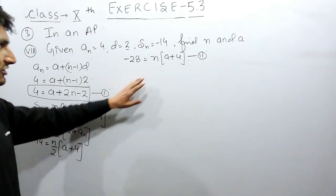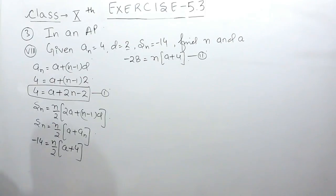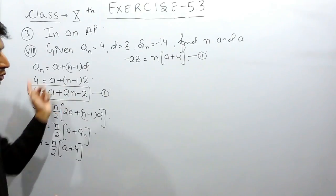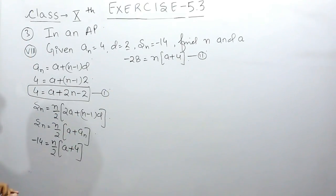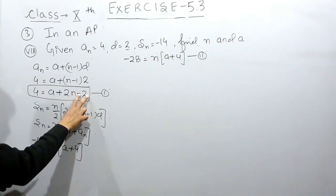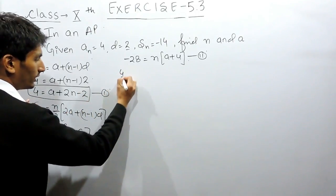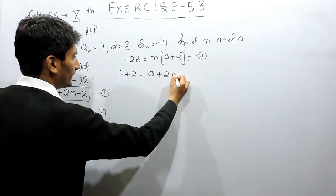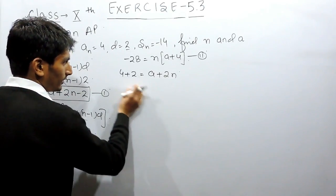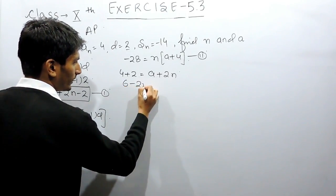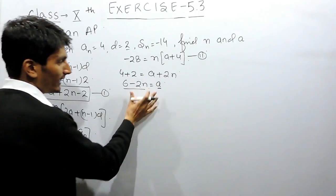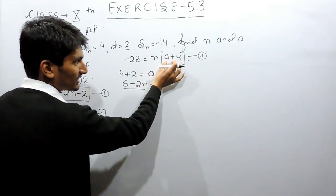From equation one and equation two, we can substitute the value of one variable from one equation into the other. From equation one, shifting the constant to the other side: 4 plus 2 gives a plus 2n, and then shifting 2n gives a equals 6 minus 2n. So the value of a is 6 minus 2n.